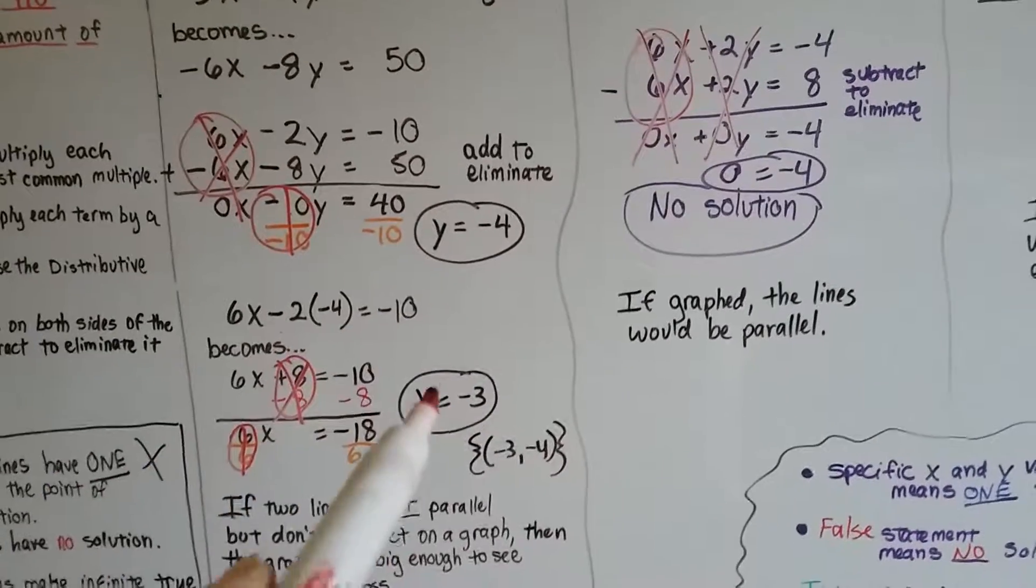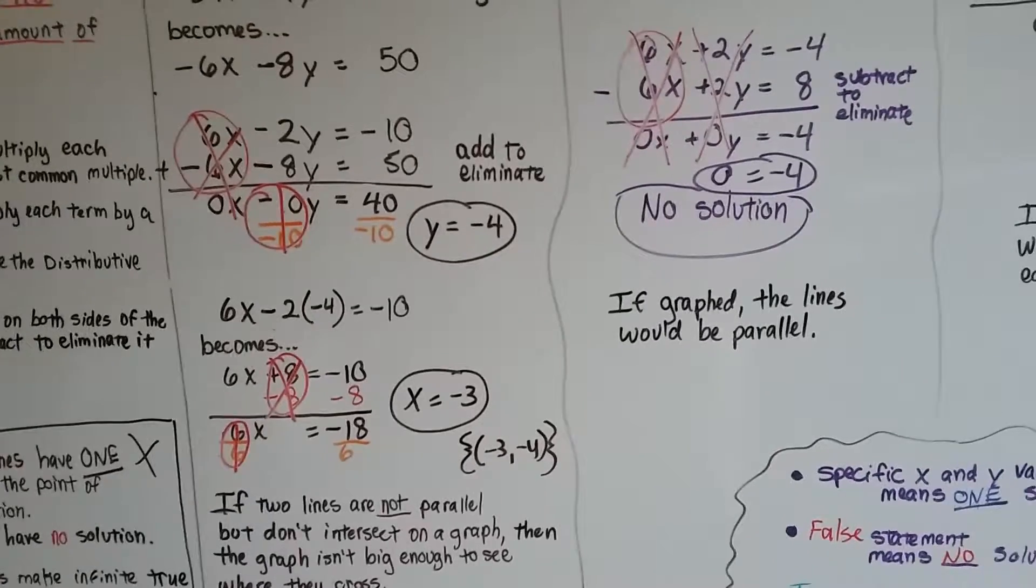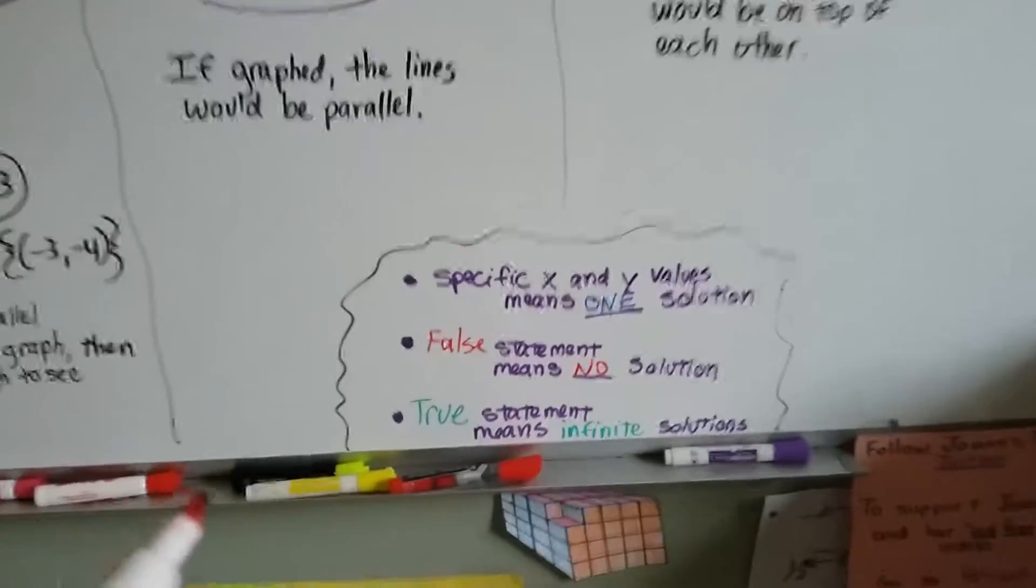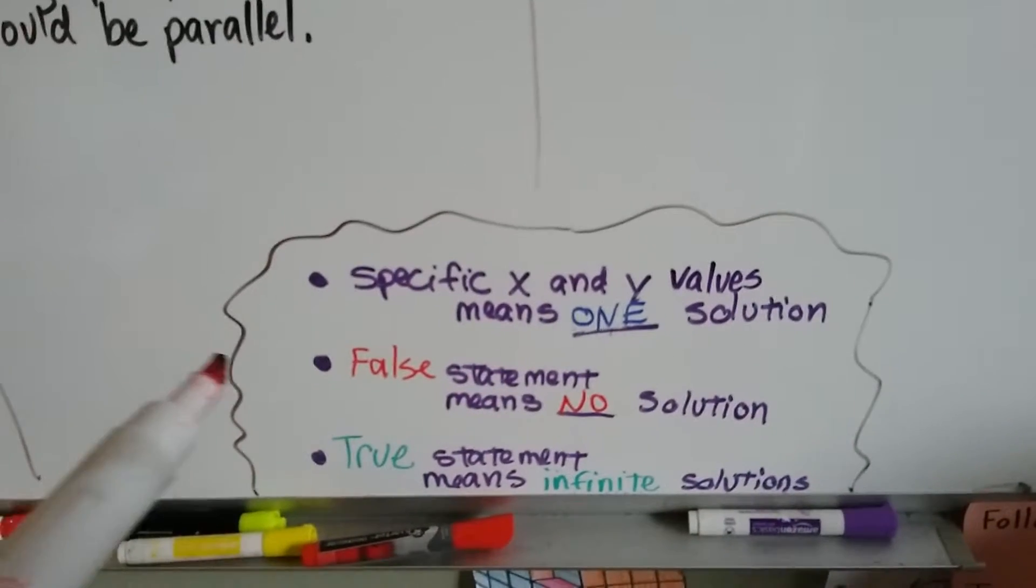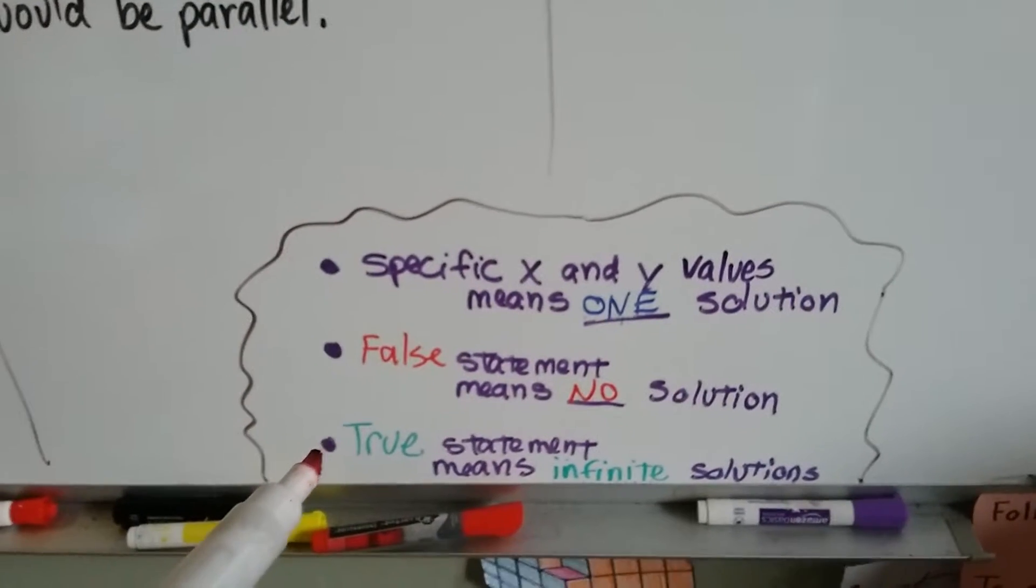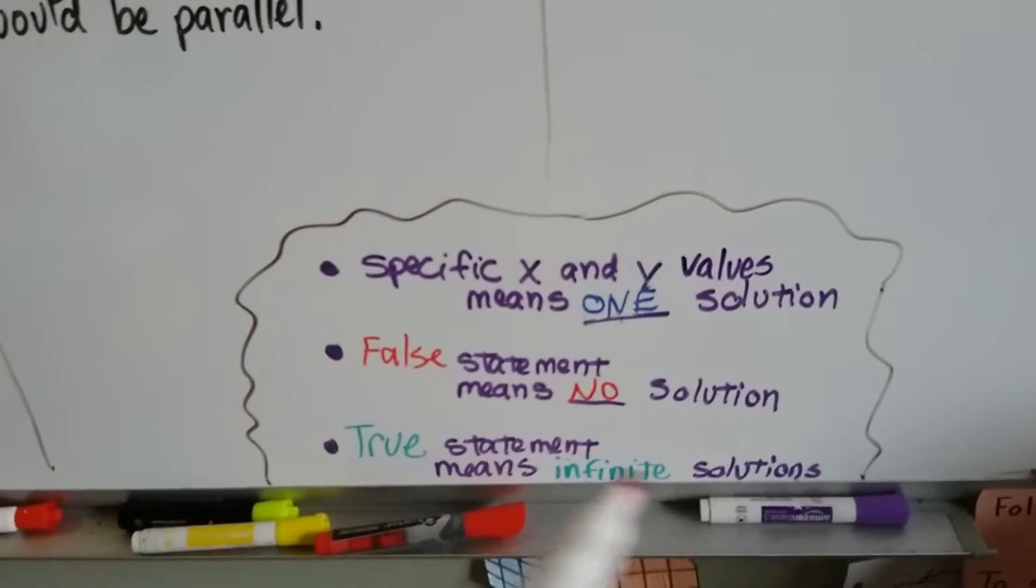When we come up with an exact point for x and y, there's one solution. So specific x and y values means one solution. False statement means no solution, they're parallel. True statement means infinite solutions because they're on top of each other.